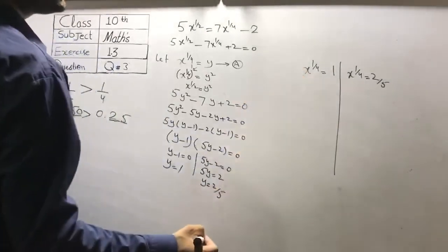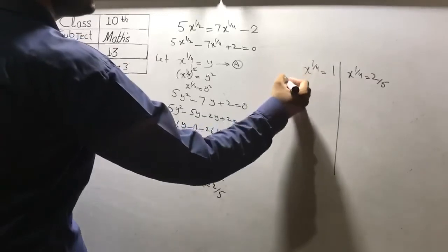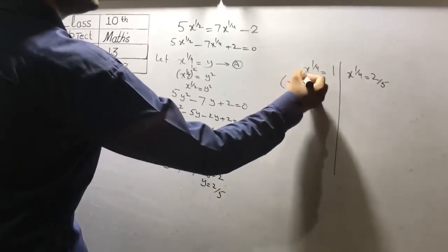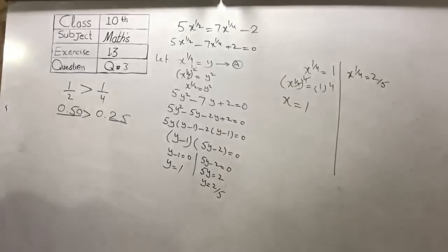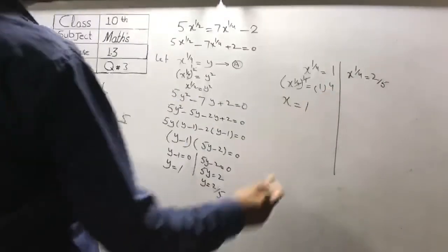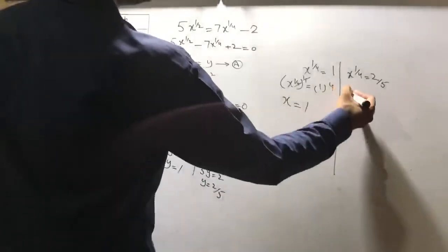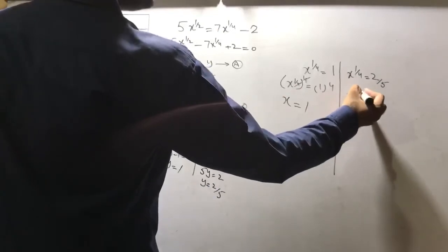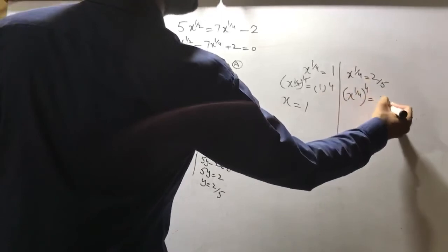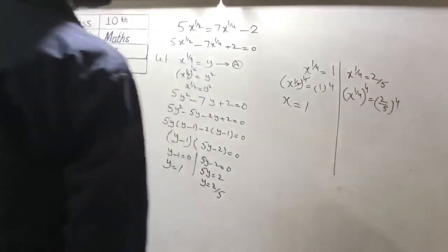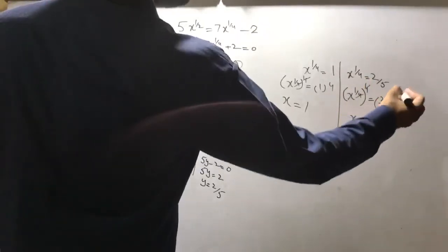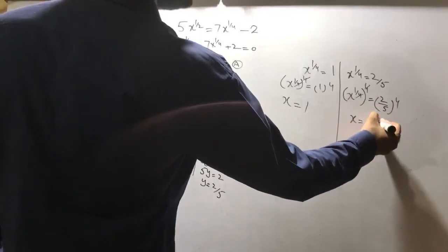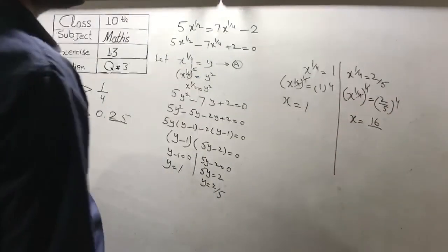Now we raise both sides to power 4. For x raised to power 1 over 4 equal to 1: the 4 cancels out the 1 over 4, giving x equal to 1 raised to power 4, which is 1. For x raised to power 1 over 4 equal to 2 over 5: raising both sides to power 4, we get x equal to 2 raised to power 4 over 5 raised to power 4, which is 16 over 625.